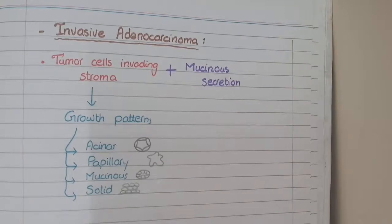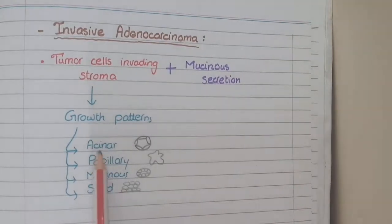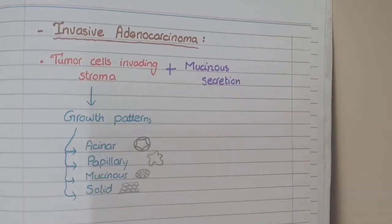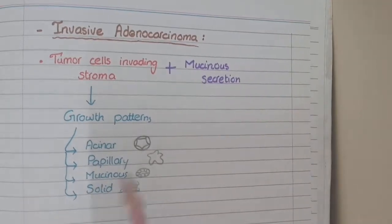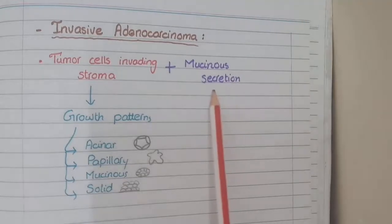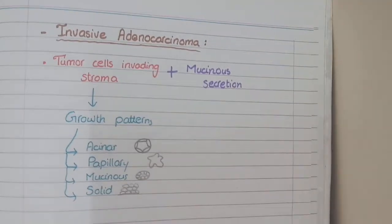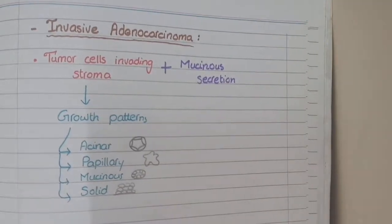So in invasive adenocarcinoma the growth patterns are acinar, papillary, mucinous, and solid. In most cases the tumors also manifest mucinous secretions, which are a characteristic feature of adenocarcinoma.